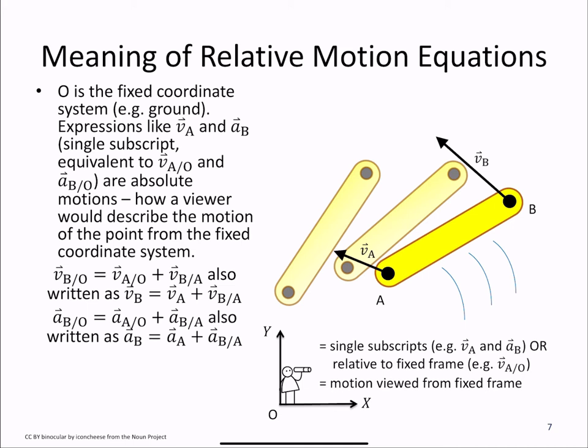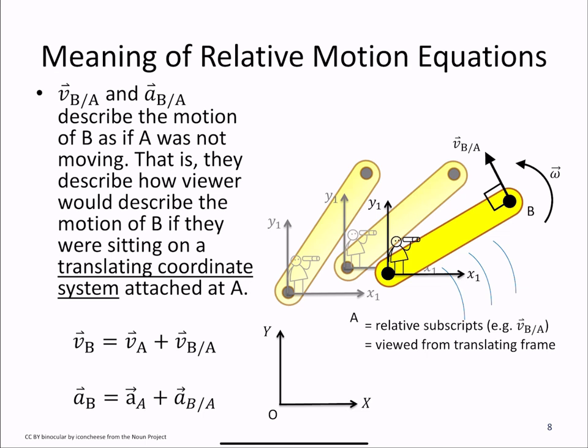With a single subscript, or a subscript of a point with respect to O, we're describing the motion of that point as a viewer on the ground would see it. When we look at the relative terms VB with respect to A and AB with respect to A, that describes the motion of B as if A was not moving.